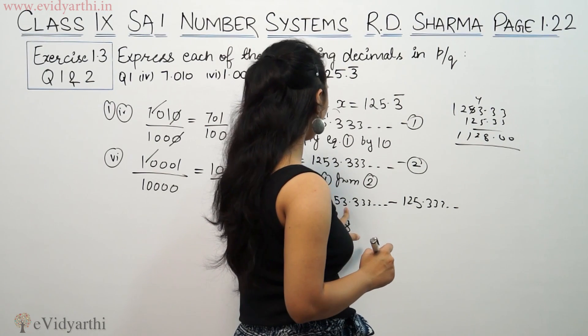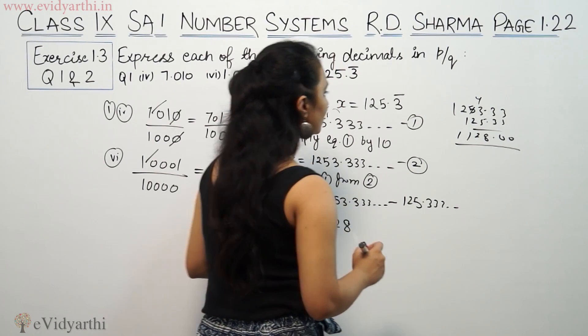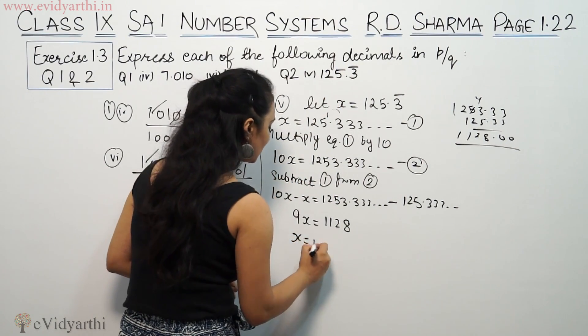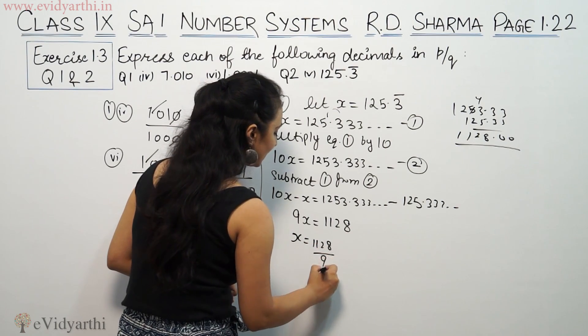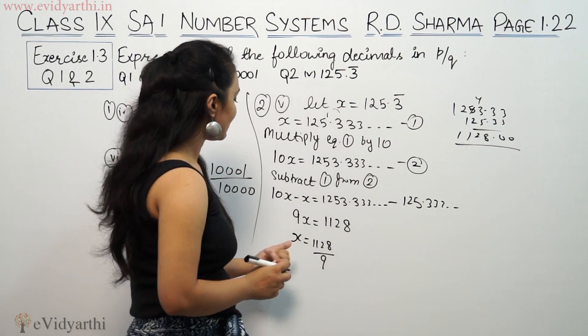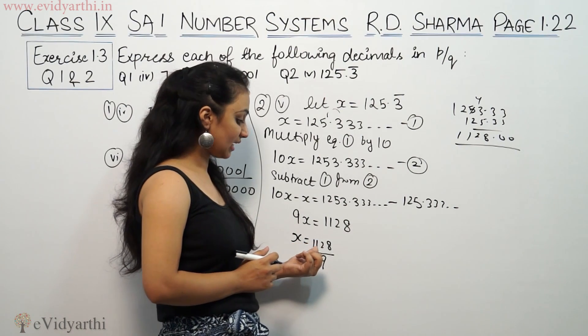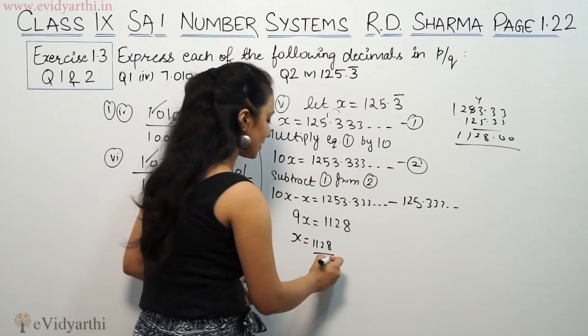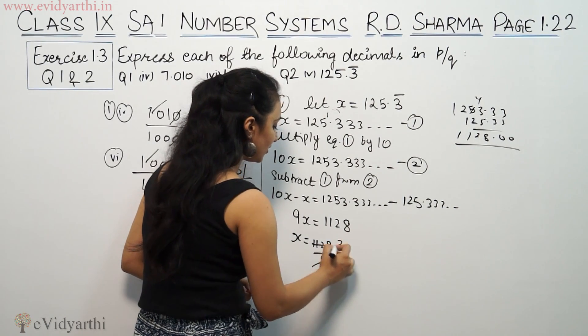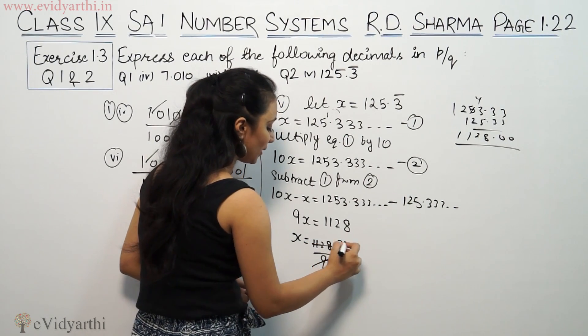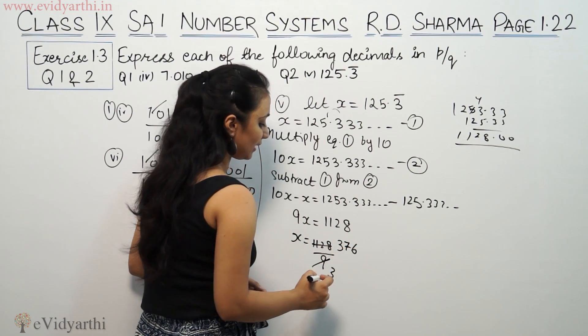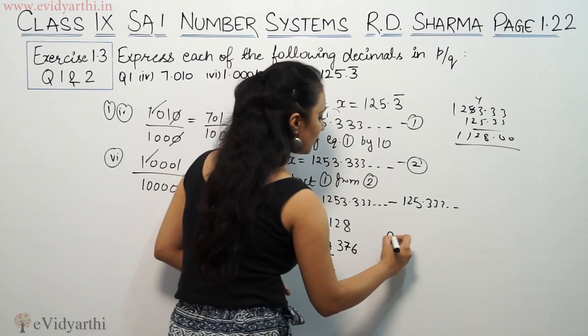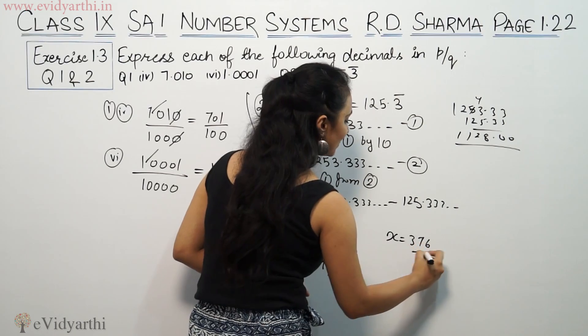So x equals 1128 by 9. We can simplify this further. Dividing both by 3, 1128 divided by 3 is 376, and 9 divided by 3 is 3. So it equals 376 by 3.